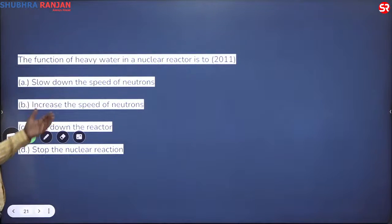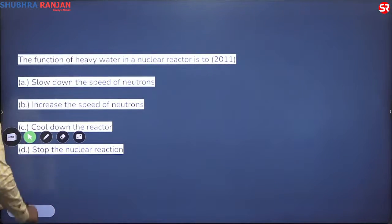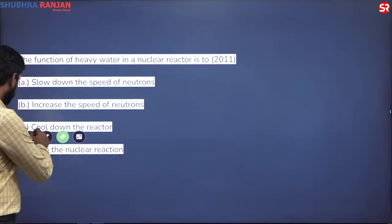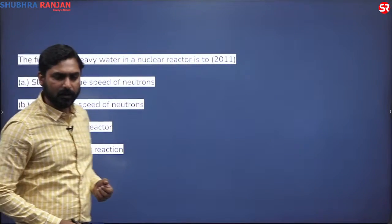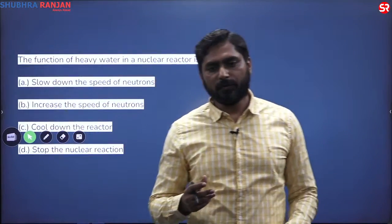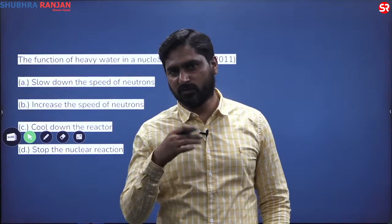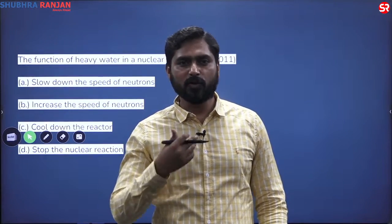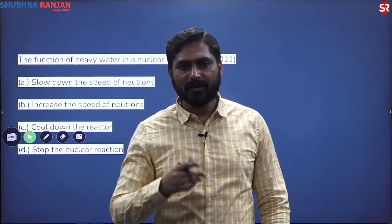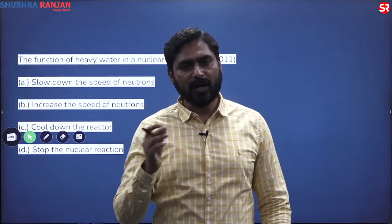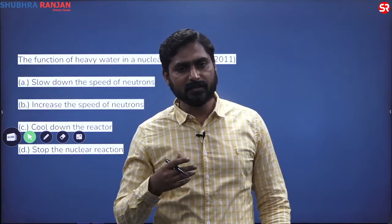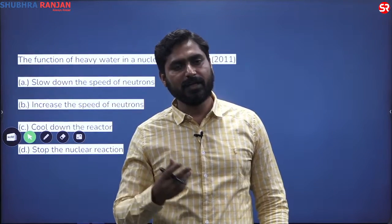The next question asks about the function of heavy water in a nuclear reactor. You would have heard about water, but what is heavy water? Hydrogen has isotopes — meaning an element has two or more forms. Hydrogen has three isotopes; two of them are known as deuterium and tritium. Heavy water is basically composed of deuterium, where deuterium is used instead of simple hydrogen.